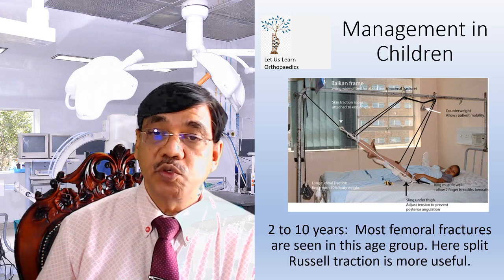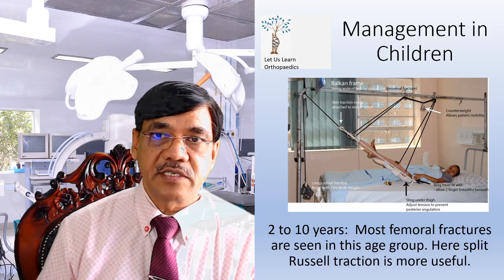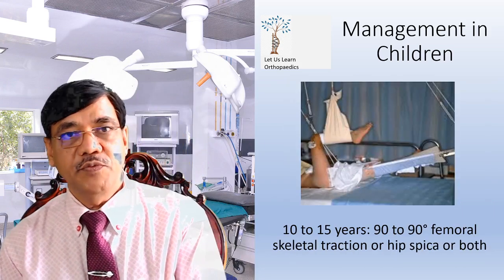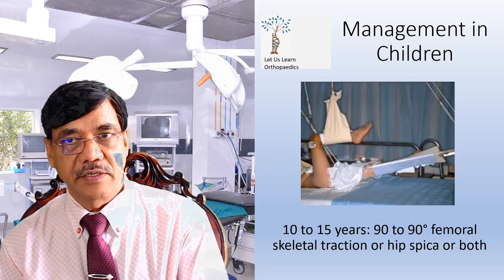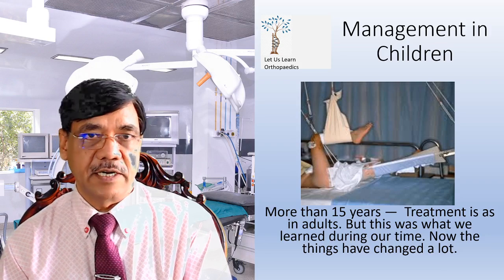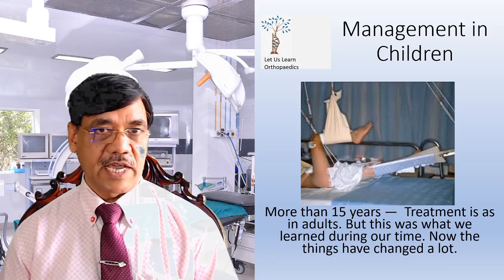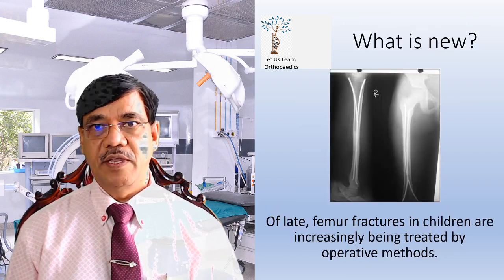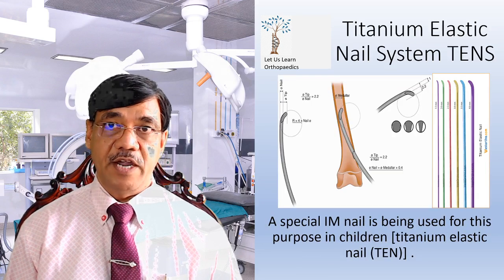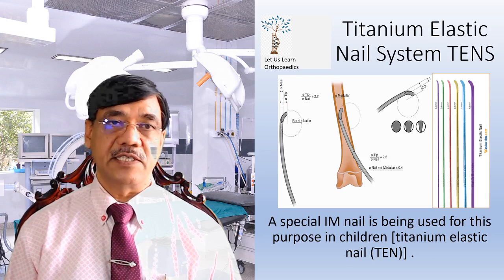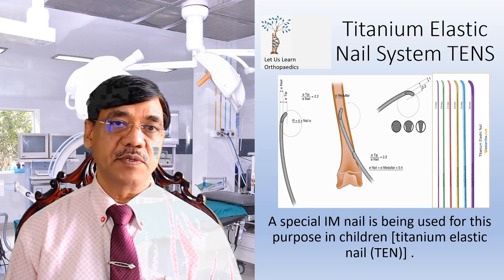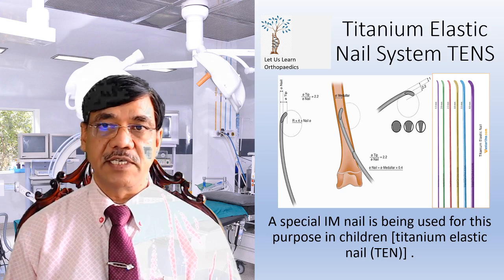For 2 to 10 years old children, most femoral fractures are seen in this age group and the split Russell traction is most useful. For 10 to 15 years, 90-90 femoral traction or hip spica are both options. More than 15 years, treatment is as in adults. Off-late, femoral fractures in children are increasingly being treated by operative methods using the titanium elastic nail system, TENS, a special intramedullary nail used in children.